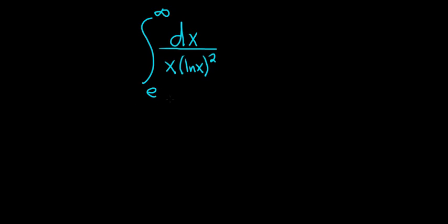In this problem we're going to integrate dx over x times the natural log of x squared from e to infinity. So this is an example of something that's called an improper integral. In this case it's improper because it has this infinity up here.